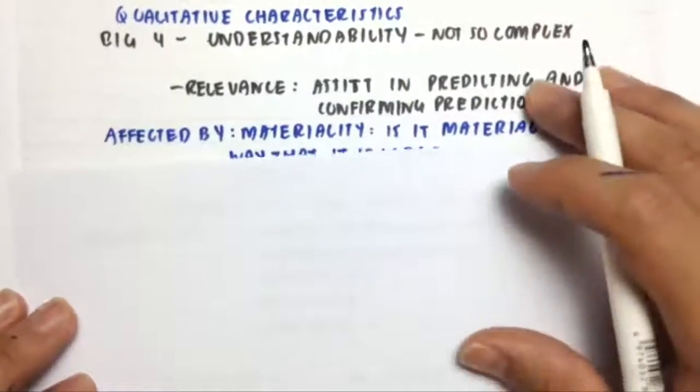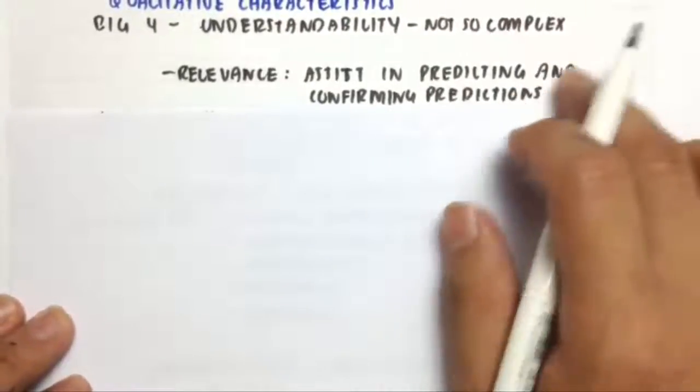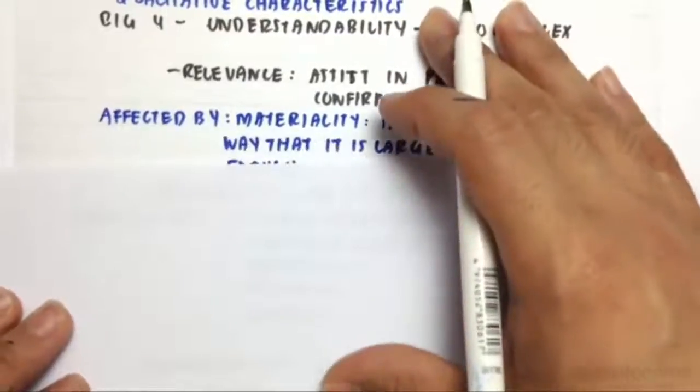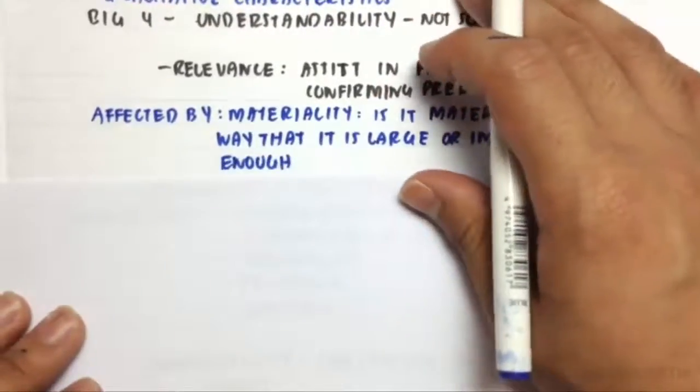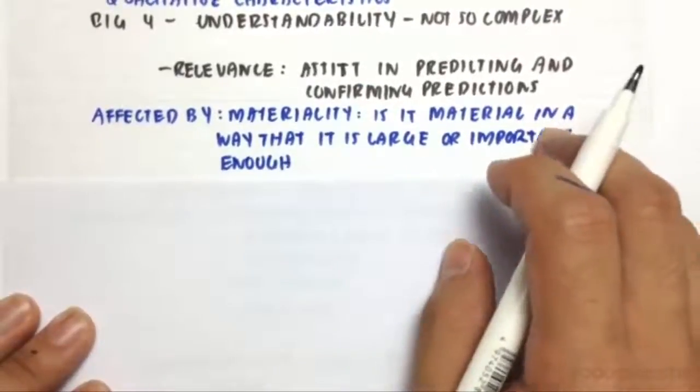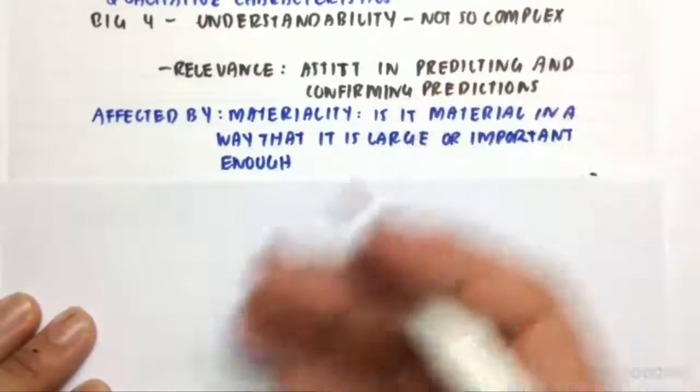Then we have relevance. So that means the information should assist users in predicting and confirming predictions. And for it to be able to do that, there needs to be materiality. So if it is material, in a way that means it's a larger and important effect on the financial statements, it must be included.